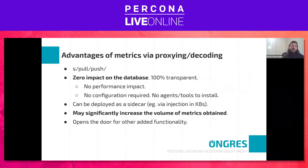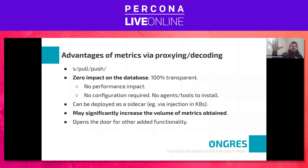To summarize the advantages: by processing and decoding the traffic we're replacing a pull model — where the monitoring agent queries the database — with a push model. As soon as we have metrics we push them out, giving us real-time metrics with less overhead. And especially on the database side, there is zero impact.